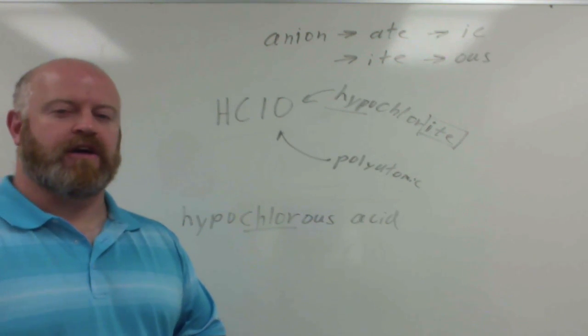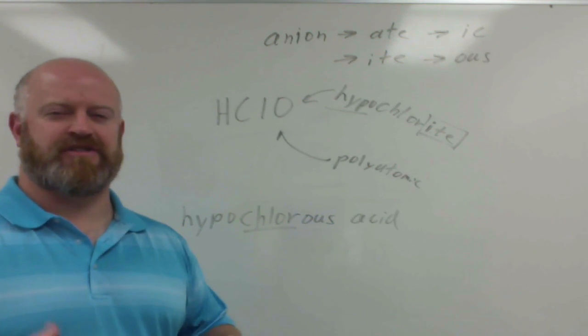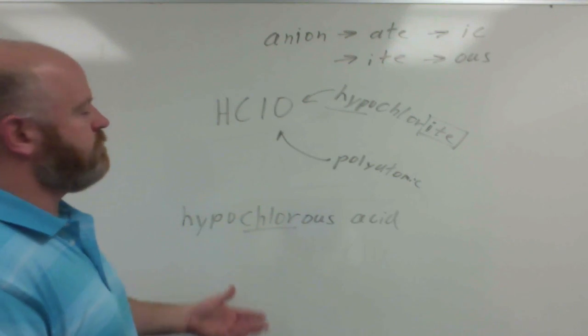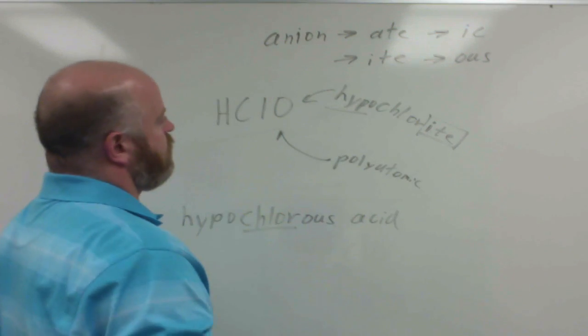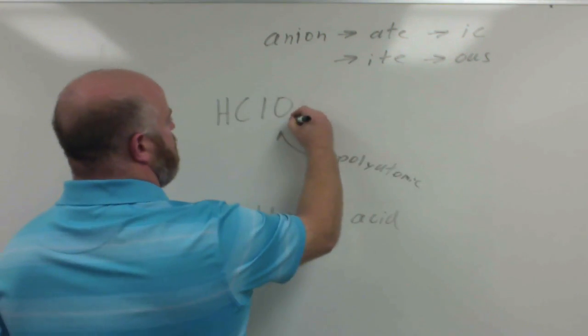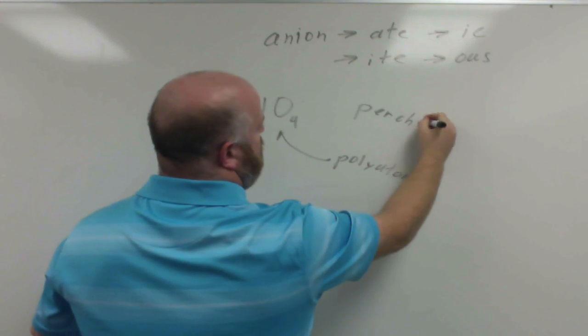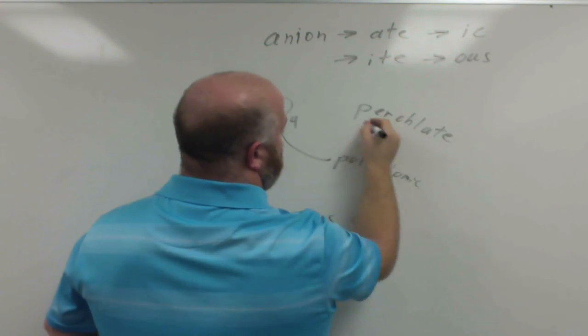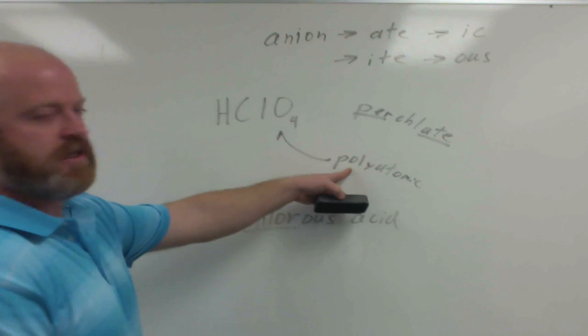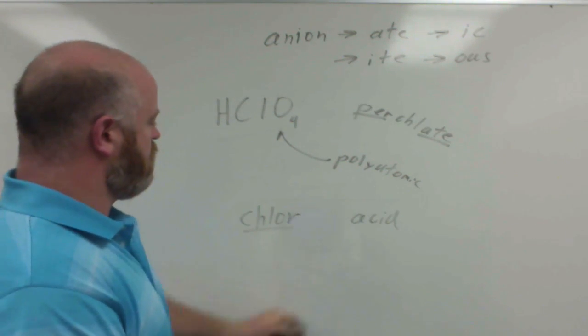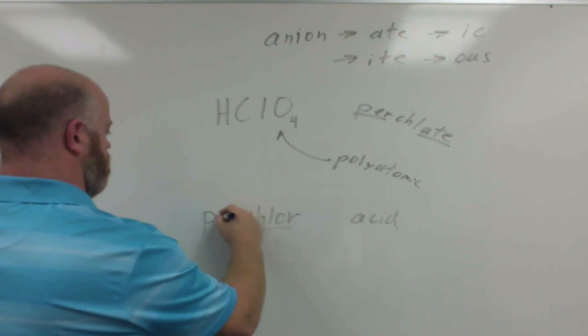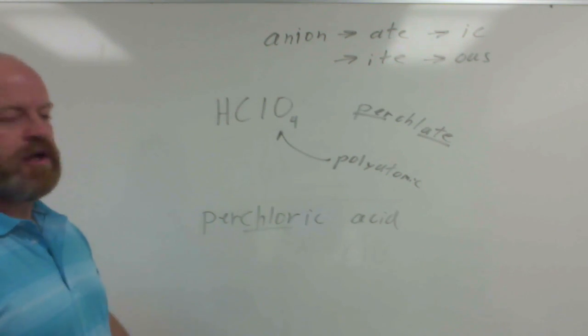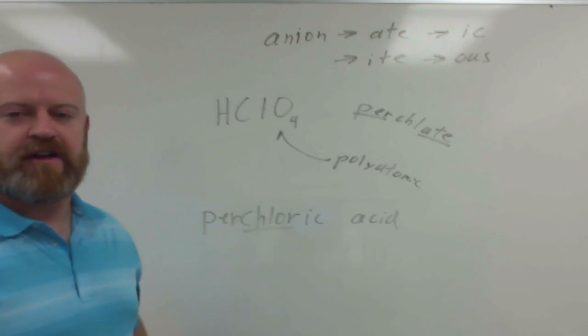So it's using a lot of the same stuff we've already done, but just kind of changing it so it matches an acid naming system instead. Obviously, if we can go down to hypo for our -ous, you could also, if you have a perchlorate, you could also have perchloric acid. So if we had HClO4, that would be a perchlorate, still a polyatomic ion, so we have to say perchloric acid for that. Okay, so that's every option for those.